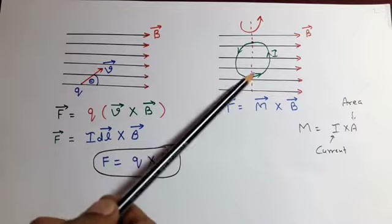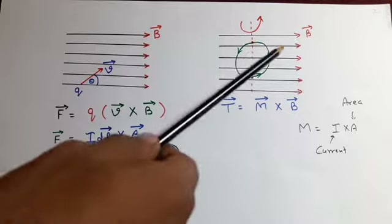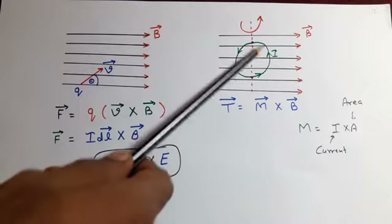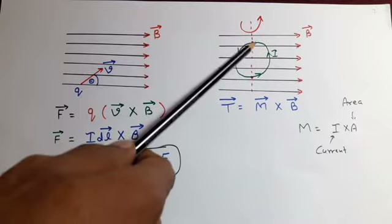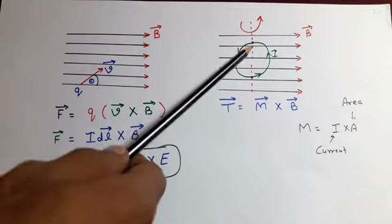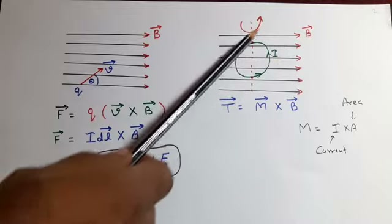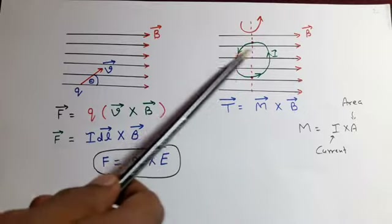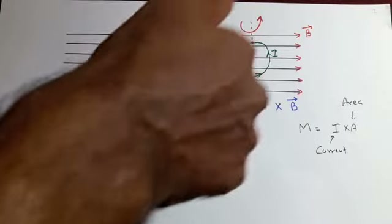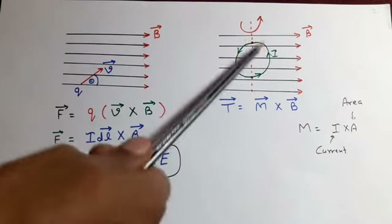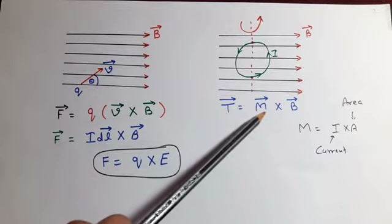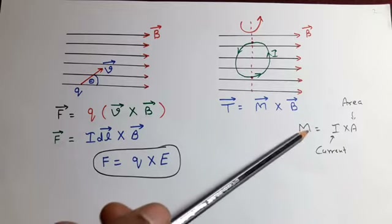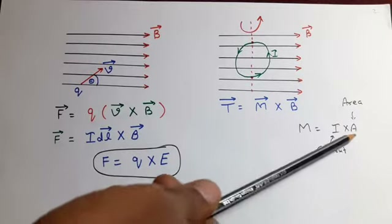We can take one more situation where suppose these are magnetic flux lines and a current carrying loop with current I and area A is placed in these magnetic flux lines. At the two ends where charge flows in the direction of the field lines, no force is experienced. But the rest of the loop will experience a force, causing the loop to rotate about the axis connecting those two points. This rotating loop produces a torque given by T equal to M cross B, where M is the magnetic moment of the loop equal to current times area.